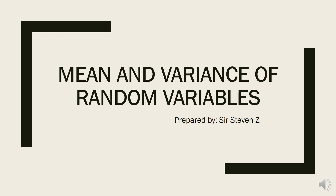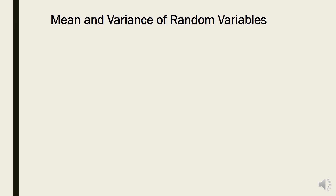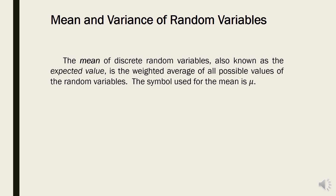Mean and Variance of Random Variables. Let us first define what is mean. The mean of discrete random variables, also known as the expected value, is the weighted average of all possible values of the random variables. The symbol used for the mean is the Greek letter mu.